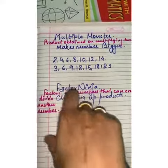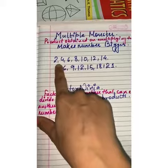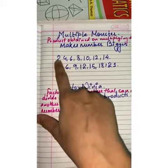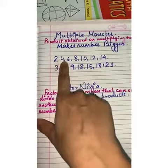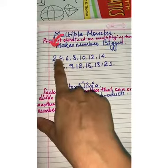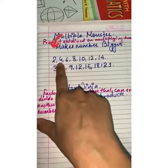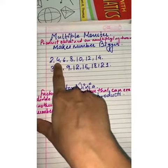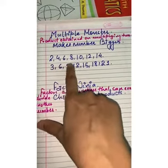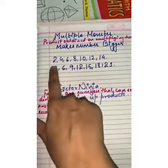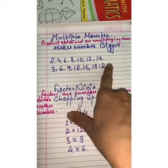Jaisi ki, example ke tawar par, first number is 2. Agar 2, 2's are kitna hota hai? 4. 2, 2's are 4. 2, 4's are 8, right? Ab, jitnay bhi numbers likhe huay hai, ye multiple monsters hai, 2 ke multiples hai, why?